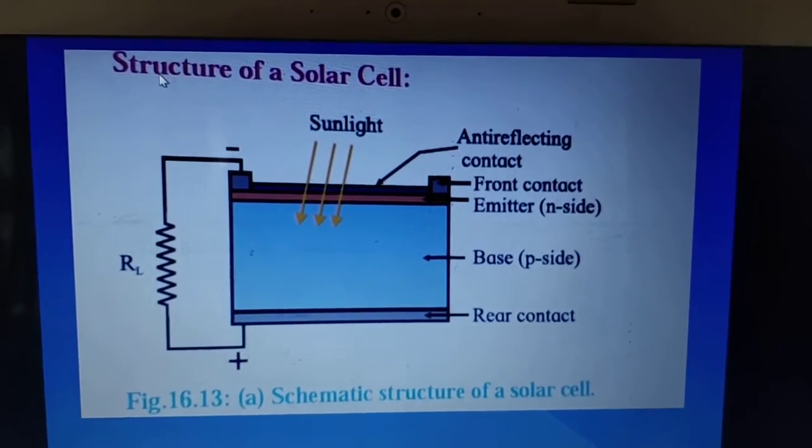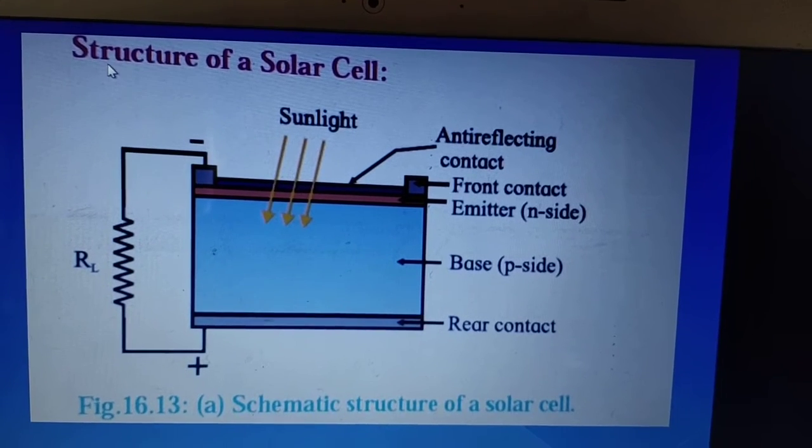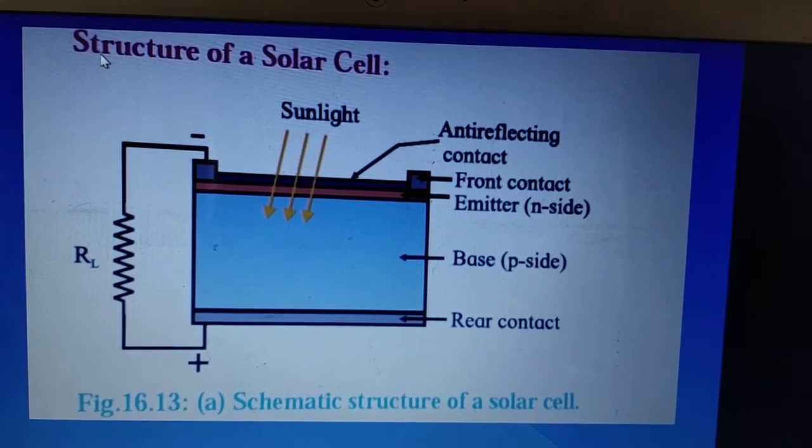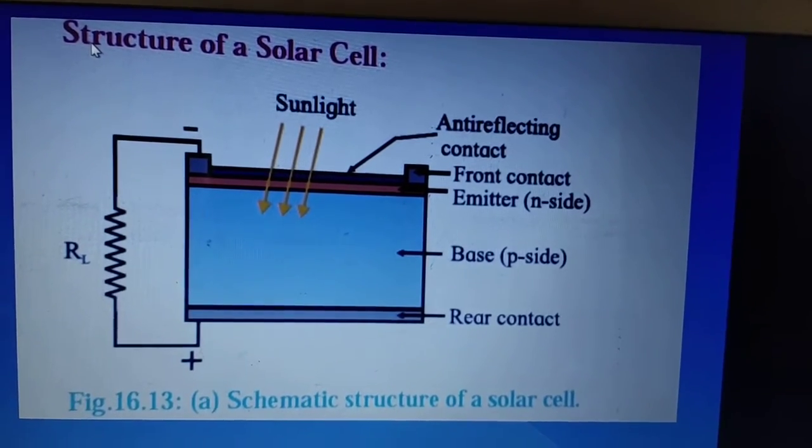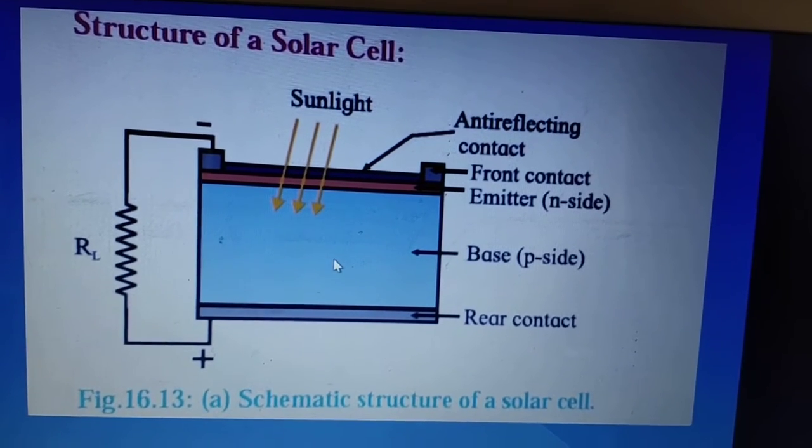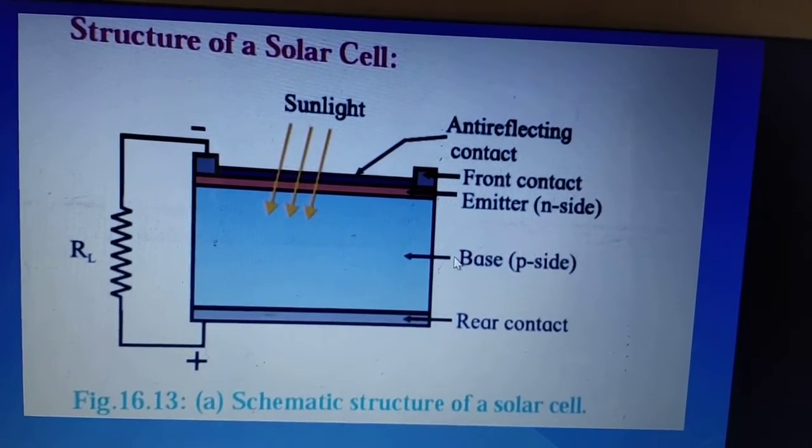Why transducer? Because it converts the solar energy into electrical energy and this p-n junction diode, specialized p-n junction diode, has the structure like this. We see a base here which is made up of a p-type semiconductor.